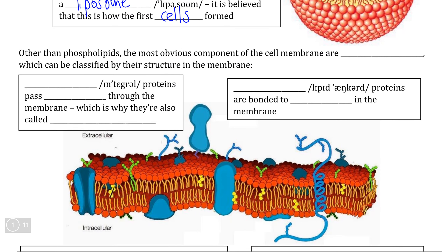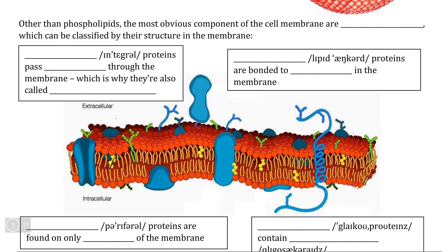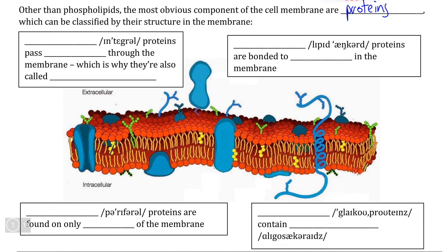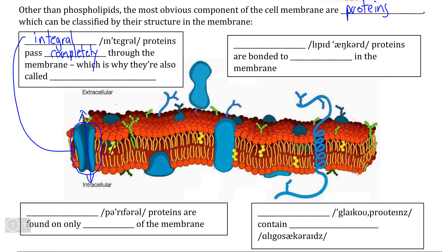Even though phospholipids compose most of the mass of the cell membrane, the second most important component are proteins, which we can see continuously embedded throughout the cell membrane. In the next video we'll look at what these proteins actually do, but for now we can learn the classification of these proteins based on their location and placement. If we take a look at a channel protein, whose job is to allow substances to pass in and out of the cell — because it passes completely through the cell membrane from one end to the other — we call these integral proteins, also known as transmembrane proteins.